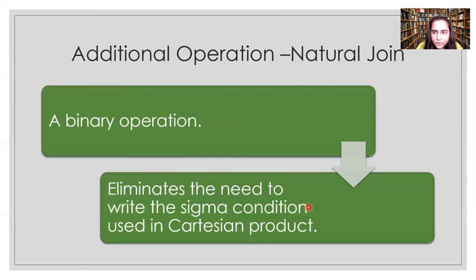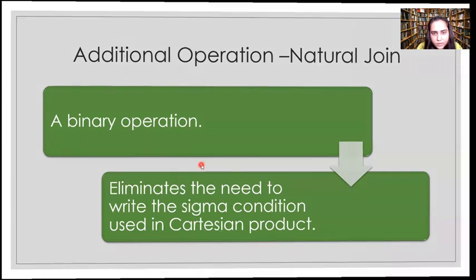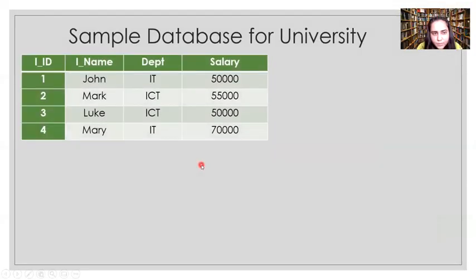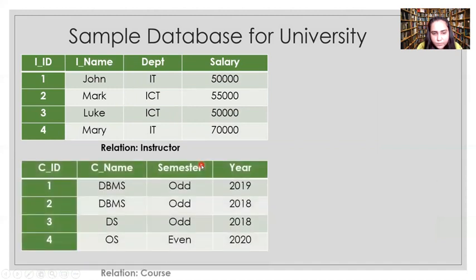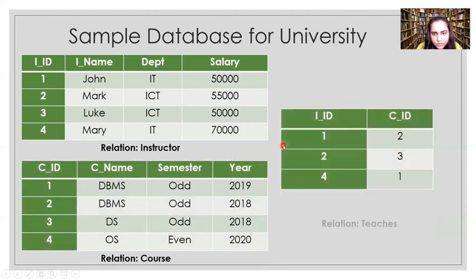Now let's move to the next additional operation: natural join. It's a binary operation and it eliminates the need to write the sigma condition used in Cartesian product. We have the instructor relation, the course relation, and the teachers relation, which I've already explained in previous videos on fundamental operations.